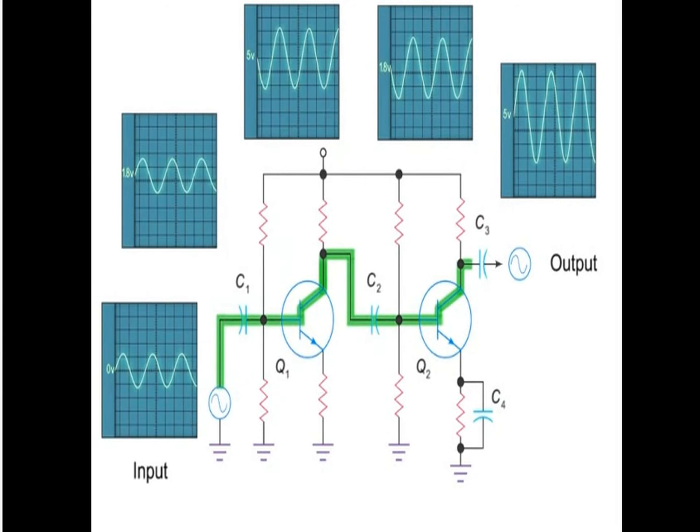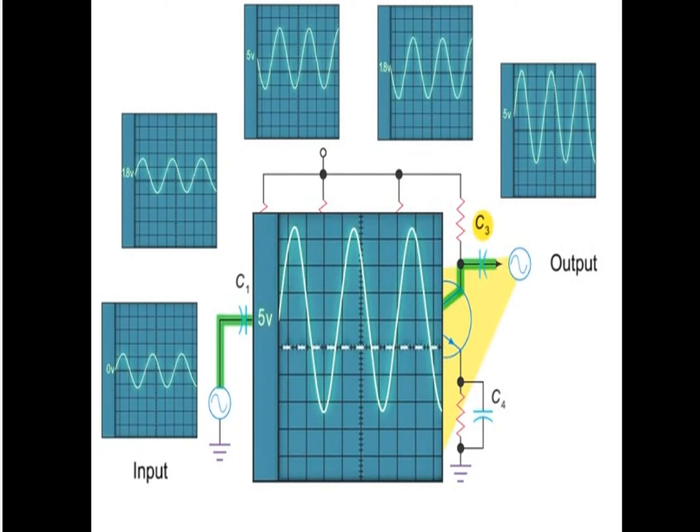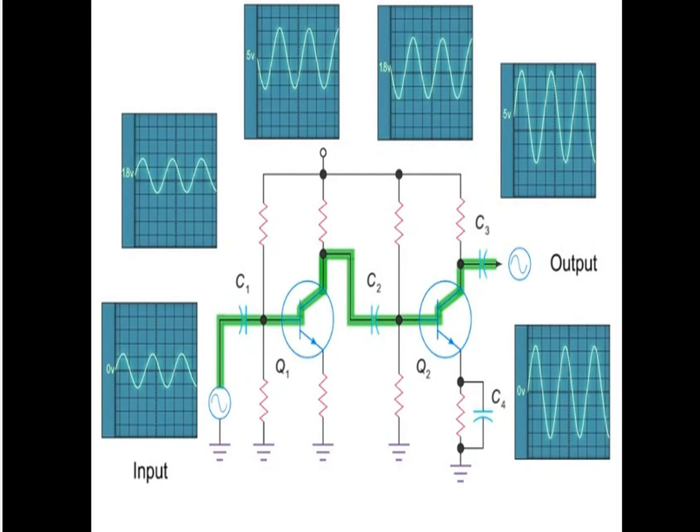A third and final coupling capacitor, C3, filters the amplified signal once again of any residual DC voltage, resulting in a final amplified wave output that is in phase with the original input.